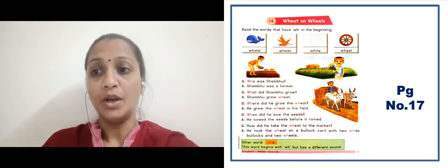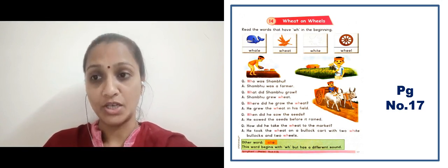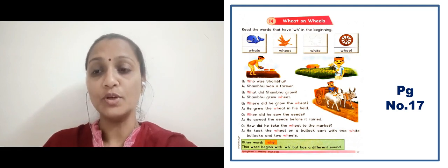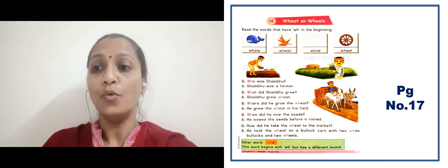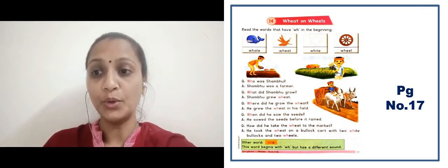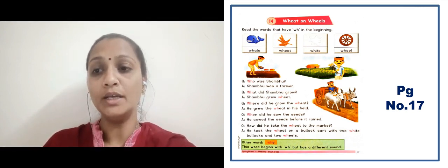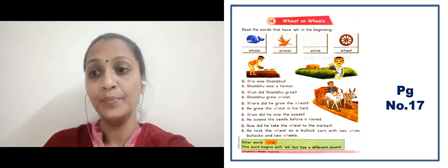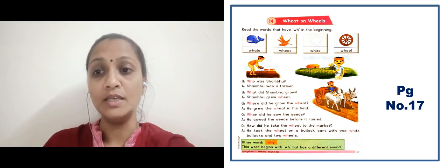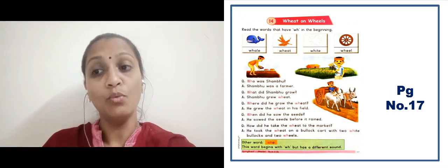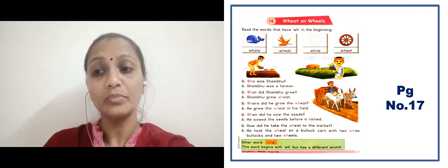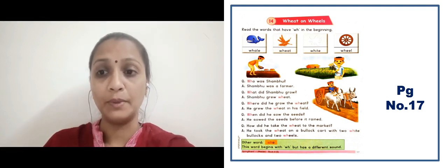Here there are questions. Who was Shamboo? Shamboo was a farmer — Shamboo jo hain woh farmer hain. What did Shamboo grow? Shamboo grew wheat — Shamboo gehun uga rahe hain. When did he grow the wheat? He grew the wheat in his field — woh apne khet mein uga rahe hain. When did he sow the seeds? He sowed the seeds before it rained — barish hone se pehle unhone beej boye.